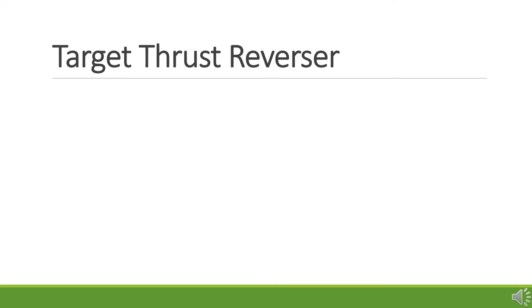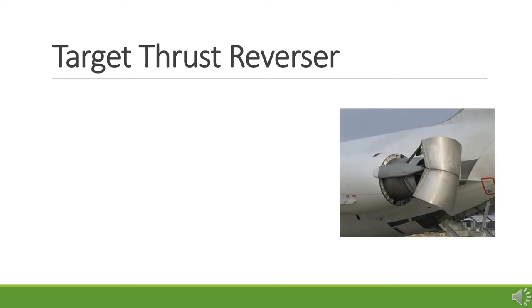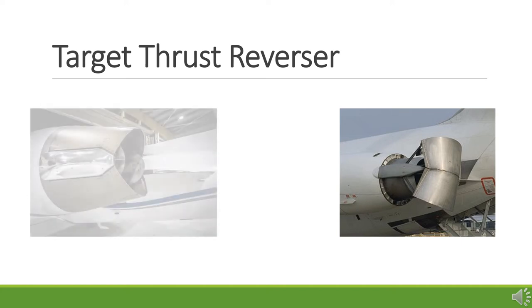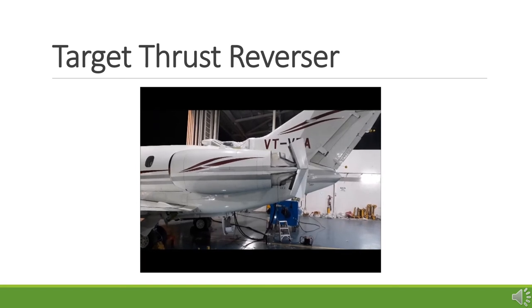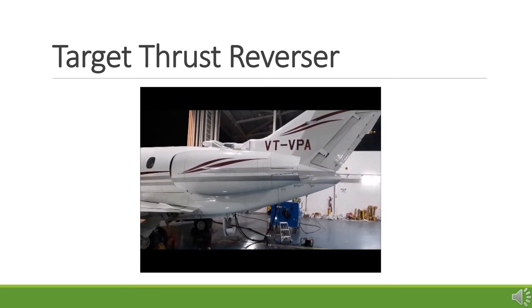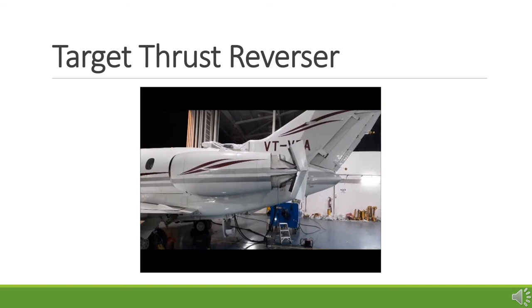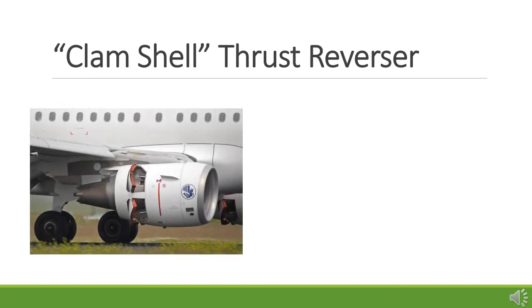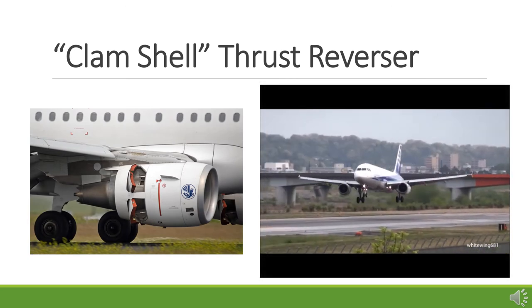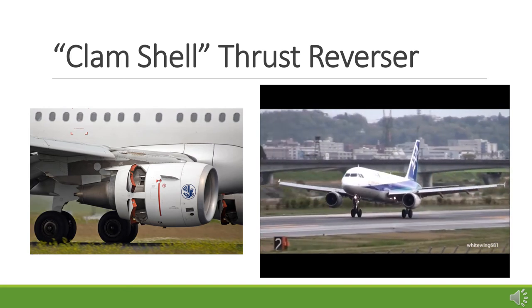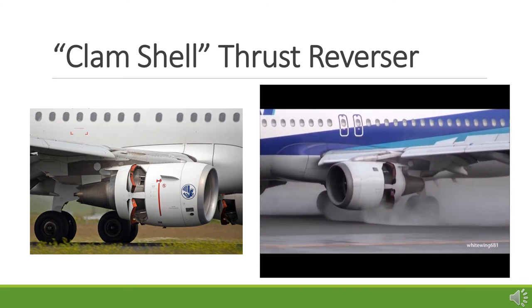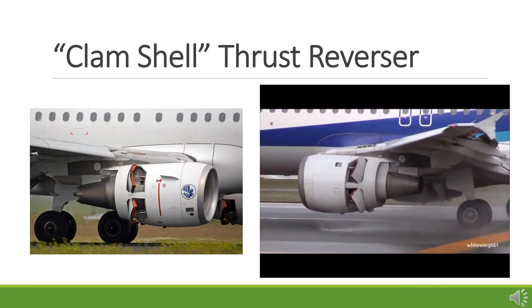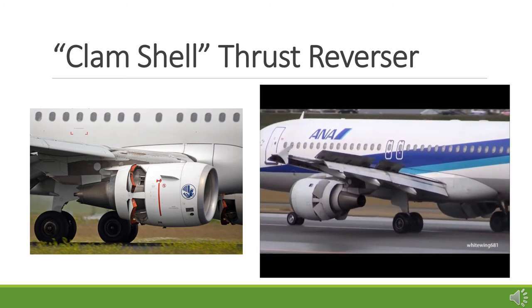The target thrust reverser uses a pair of hydraulically operated bucket-type doors to reverse the exhaust stream. During normal operation, these two doors form part of the regular exhaust nozzle. When deployed, the reverser buckets rotate into the exhaust, block the rearward flow of exhaust gases, and redirect it toward the front of the aircraft, providing deceleration. The clamshell thrust reverser is very similar to the target system, except that the clamshell interrupters are internal to the engine, located between the combustion chamber and the exhaust nozzle. When activated, doors on the side of the engine rotate to the open position and close the normal exhaust exit, causing thrust to be directed forward.